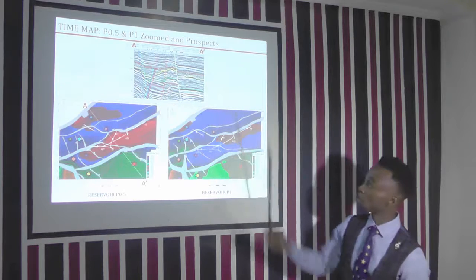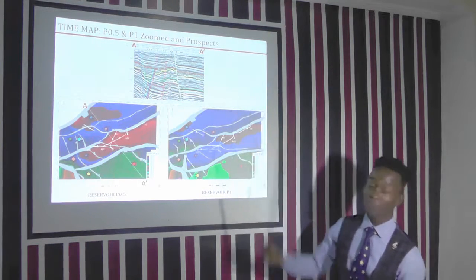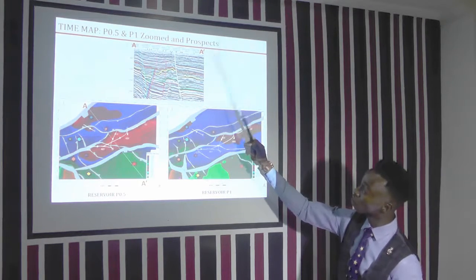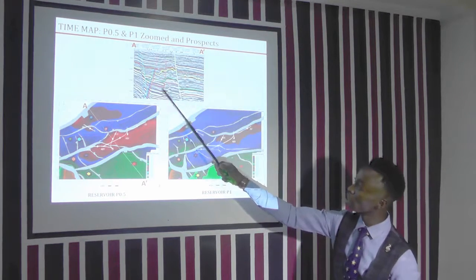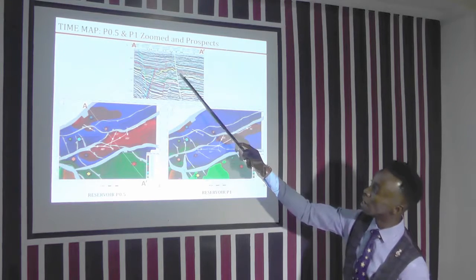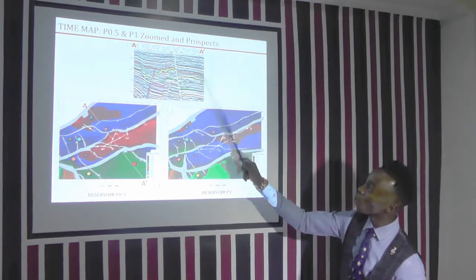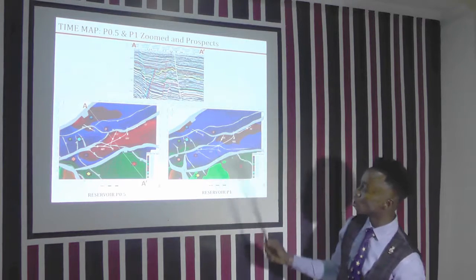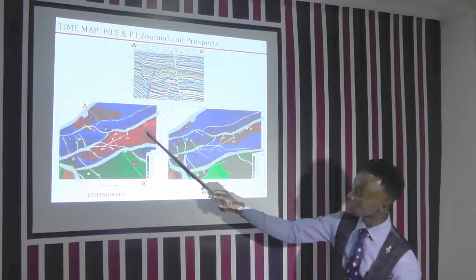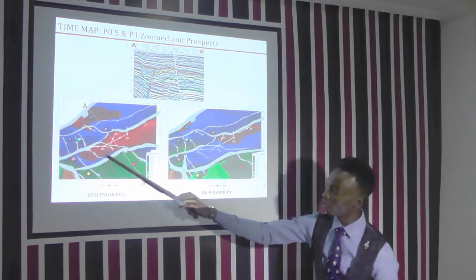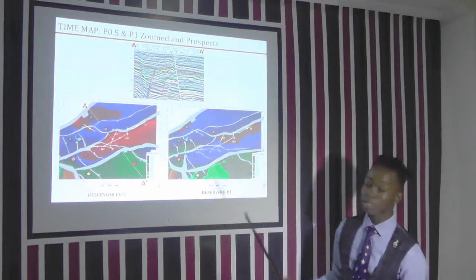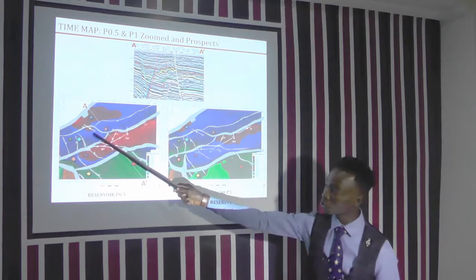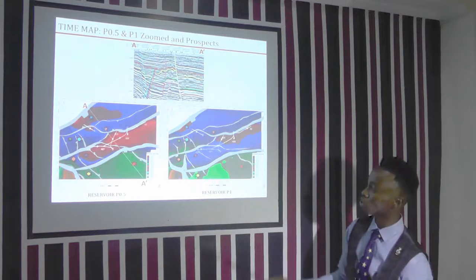On our seismic section, we identified a back-to-back fault system. We have one fault dipping to the north and another fault dipping to the south, and this is our horst area where most of our wells are located. On our time map, we identified the horst area and our wells pass through three different structures: the B1 structure, the A5X structure, and the horst structure.